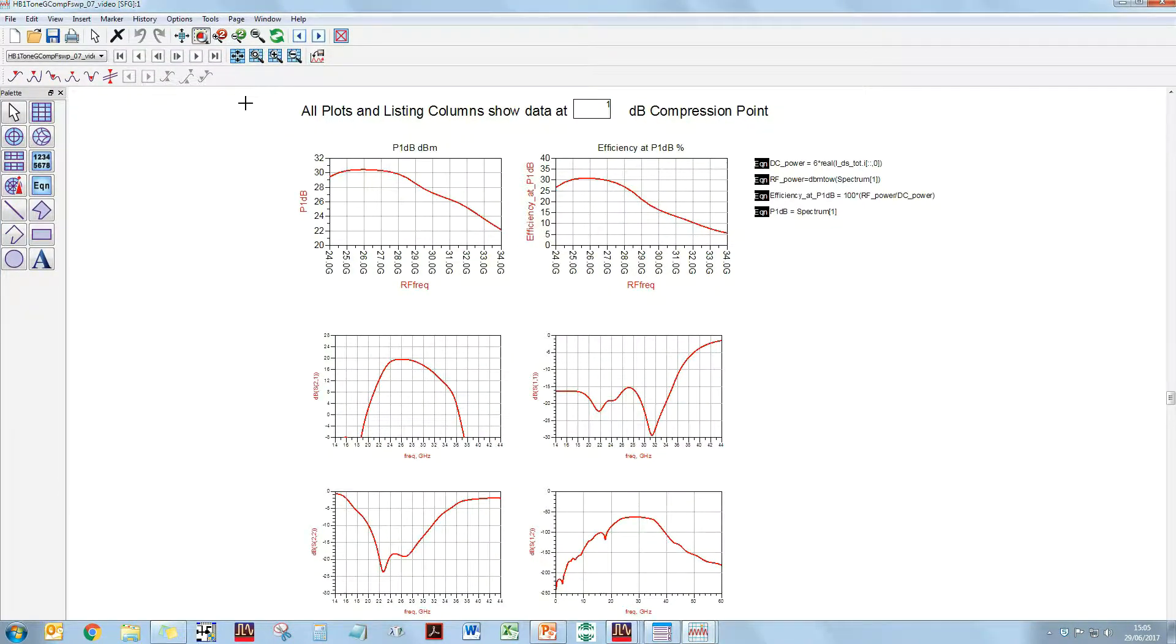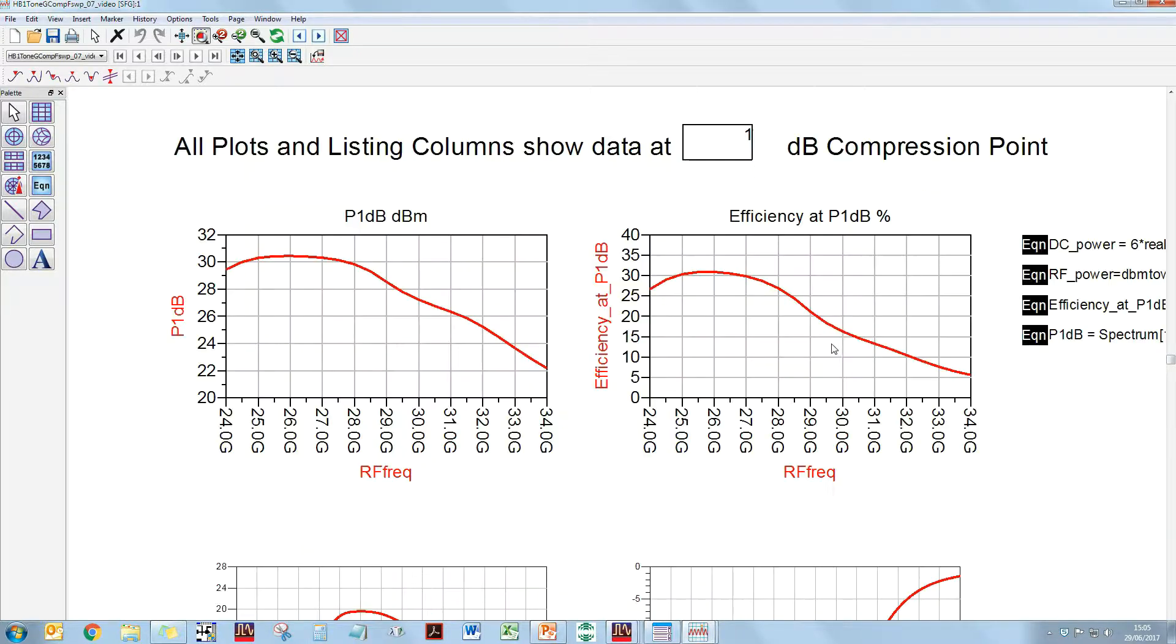Okay. So, here we have our results for the dual band PA configured for low band. Let's look at the large signal results first of all. So, this is P1 dB. So, you can see that across the low band, the output power, P1 dB, is round about 30 dBm typically across the band. And if we look at the efficiency at P1 dB, typically across the band, it's round about 30%.